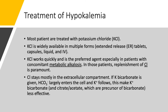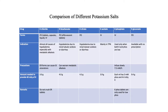Chloride stays extracellularly. When you are giving potassium bicarbonate, the bicarbonate is going to enter the cell, then potassium, which is positive, is going to follow the negative bicarb — and this makes potassium bicarbonate less effective. Potassium citrate and potassium acetate are the same thing because citrate and acetate are metabolized by the liver to bicarbonate. This table shows the available forms, and you have to pay the most attention to potassium chloride. It's available in different forms, it's the preferred treatment especially in metabolic alkalosis, and it gives the most amount of potassium, but you cannot crush the extended release tablets.